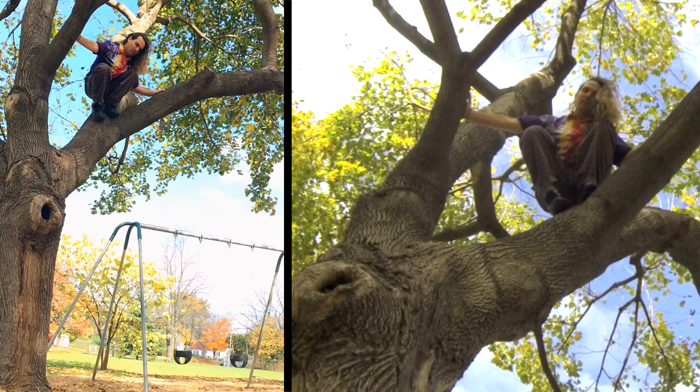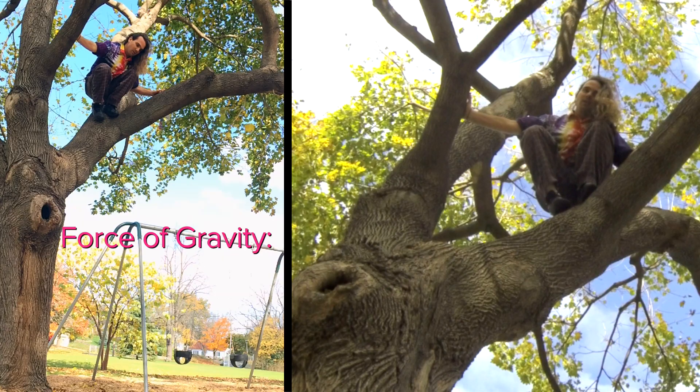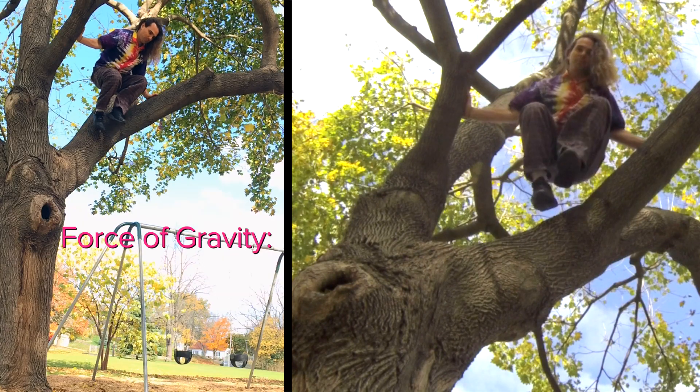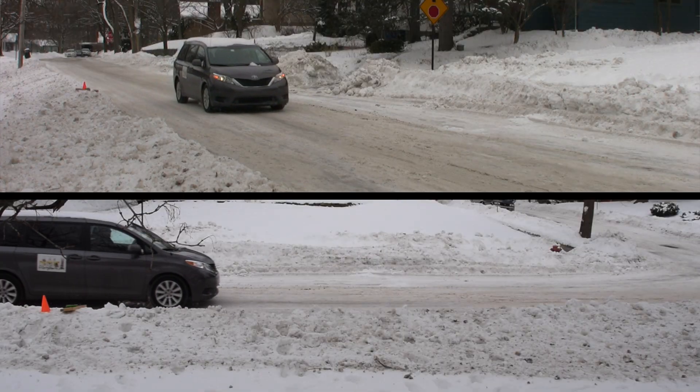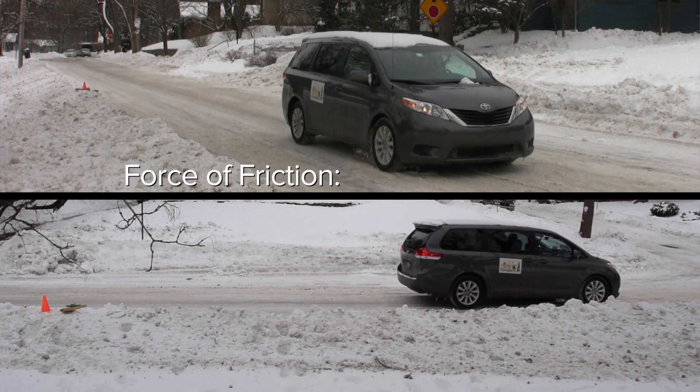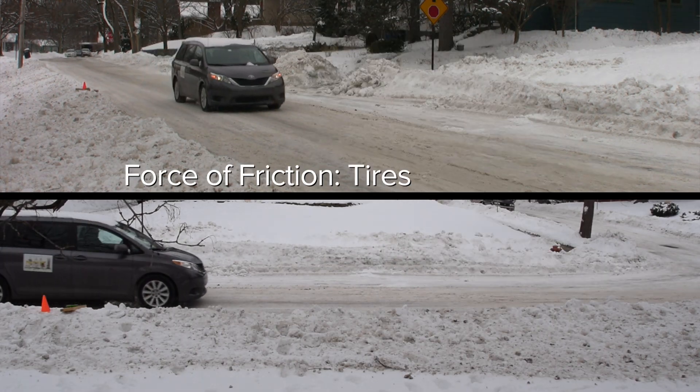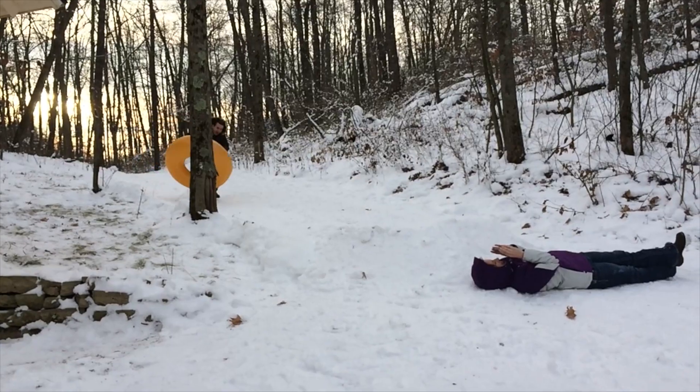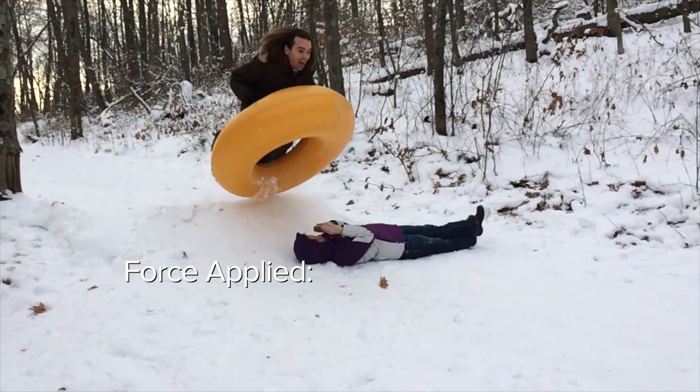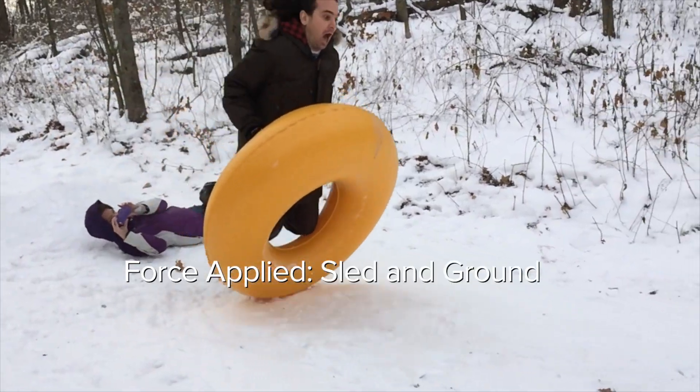For example, when I fall out of this tree, the force of gravity is the result of an interaction between my body and the earth. When this car slides to a stop, the friction force is the result of an interaction between the tires and the ground. And when this sled lands on the ground, the force applied is the result of the interaction between the sled and the ground.